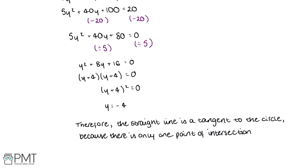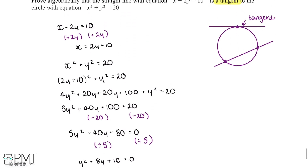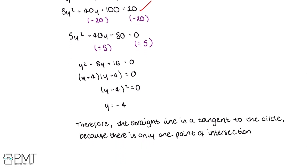This question is worth 5 marks. We get the first mark for substituting the equation of the straight line into the equation of the circle. The second mark for expanding out the brackets. The third mark for making the equation equal to 0. The fourth mark for solving the quadratic. And the fifth mark for stating that the straight line is a tangent to the circle because there is only one point of intersection, along with the supporting evidence.